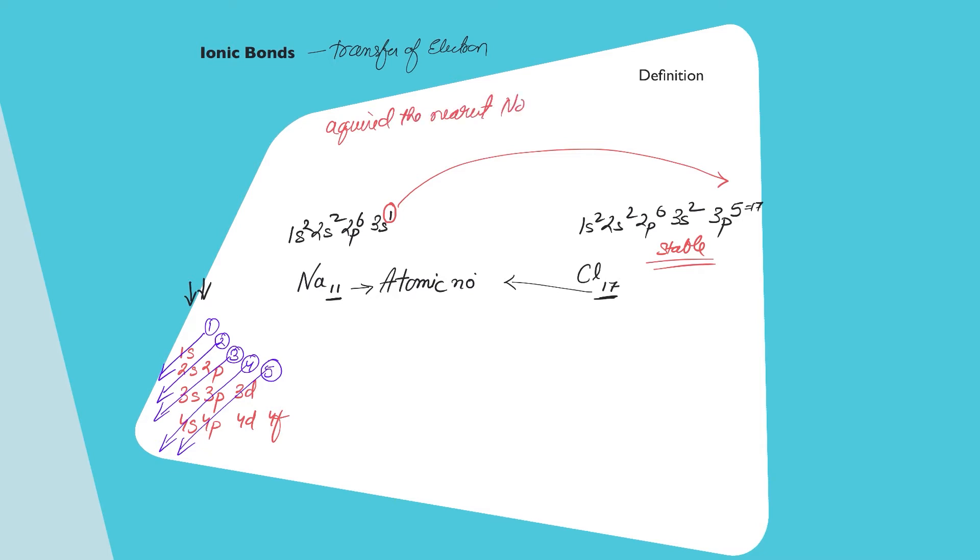By stable we mean they would have acquired the nearest noble gas configuration. Now what is the nearest noble gas configuration? So if you remember, the nearest noble gas to sodium is neon. Now what is the atomic number of neon? I hope you remember that is 10. So 1s2, 2s2, 2p6. All the orbitals completely filled.